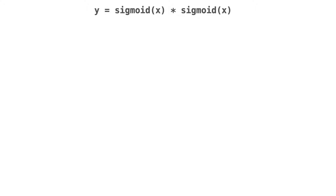Let's take a very simple example in which we want to compute y = sigmoid × sigmoid. Note that this simple operation can be directly implemented in Python using the PyTorch Python extensions, but we want to do it in CUDA and C++ basically to understand the process involved in writing our own kernels. In this case, this is not a good solution, but we are just using this example for simplicity.